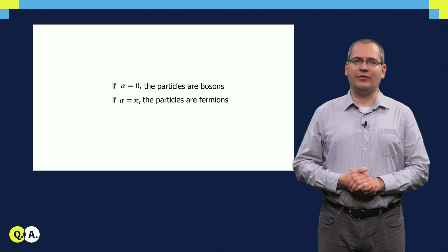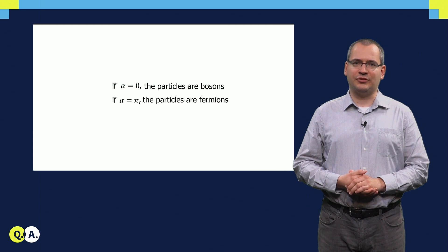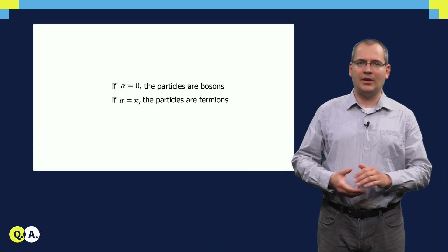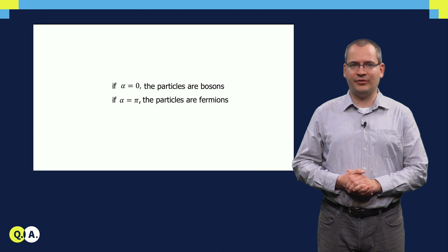Alternatively, alpha equals pi, and after two exchanges we rotated the wave function with 2pi, which is a full circle. In this case, we have fermions, such as electrons, protons, or neutrinos.